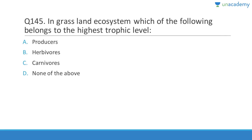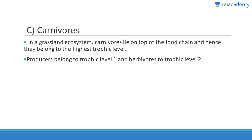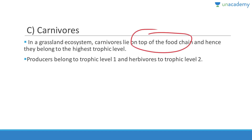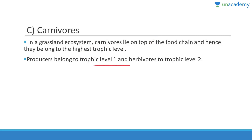In a grassland ecosystem, carnivores belong to the highest trophic level — they sit at the top and eat everyone else. Producers — plants and grasses — belong to trophic level one, herbivores belong to trophic level two, and carnivores lie at the top of the food chain.